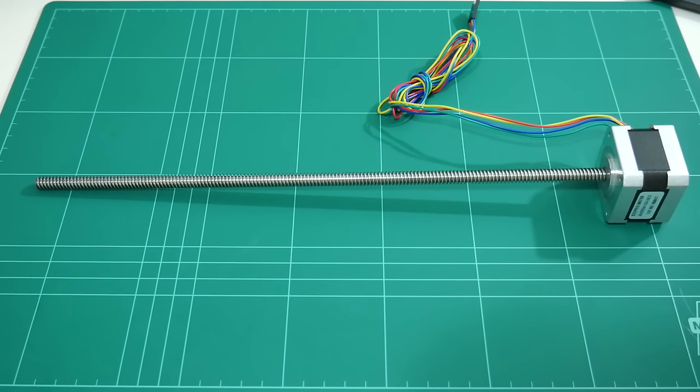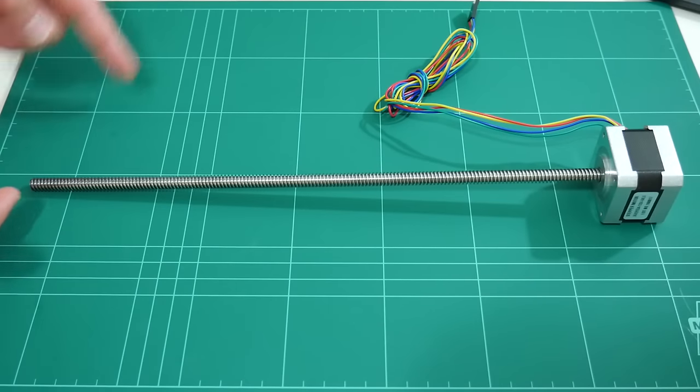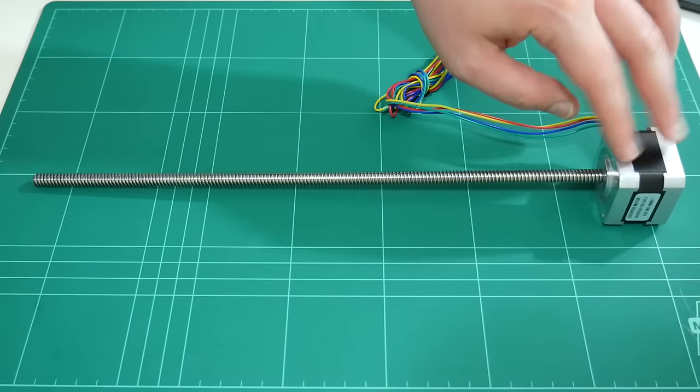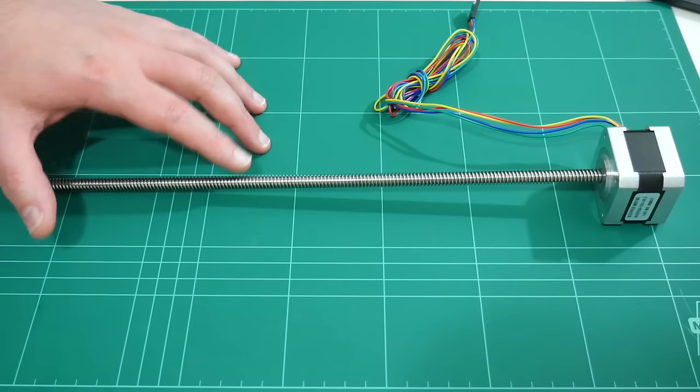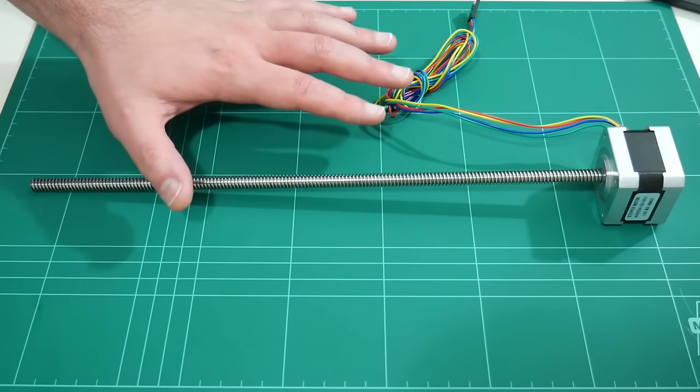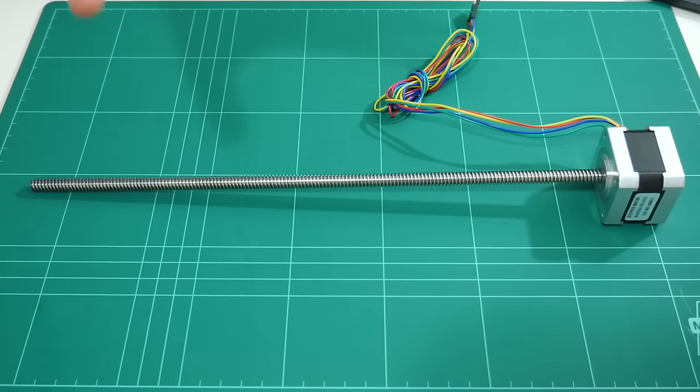If you own a 3D printer or any other form of CNC machine, then chances are you know what this is. This is a NEMA 17 sized stepper motor with an integrated lead screw. I use one of these on my 3D printer to move the build platform up and down in the Z axis.